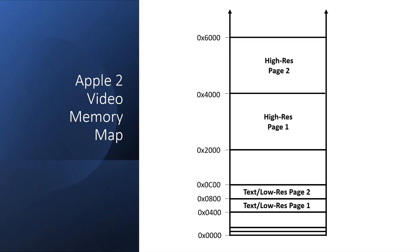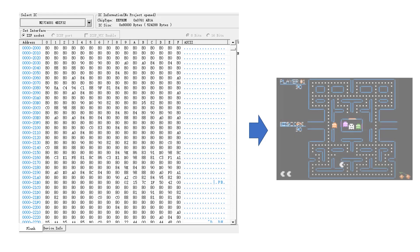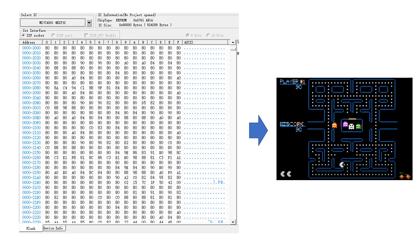The Apple II stores this information in its main memory. Here's the way the memory is laid out in the Apple II. There are two text pages, which are also used for low-res graphics, and there are two high-res graphics pages. Pac-Man uses high-res page 1, which means the image of the maze with Pac-Man and the ghosts is stored in main memory starting at location 2000 hex, going up to 3FFF hex — an 8-kilobyte block of memory.